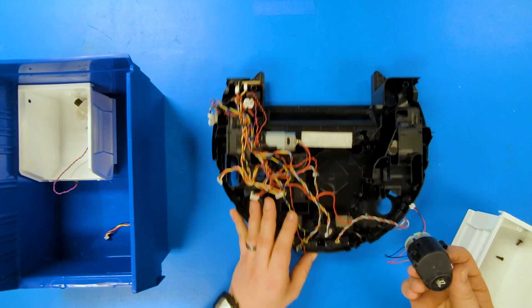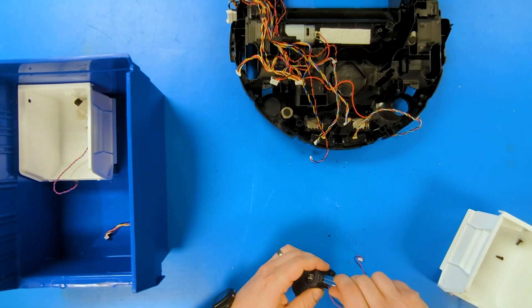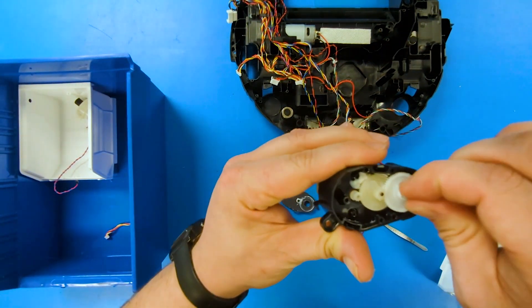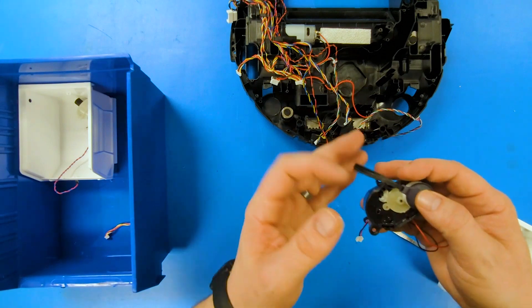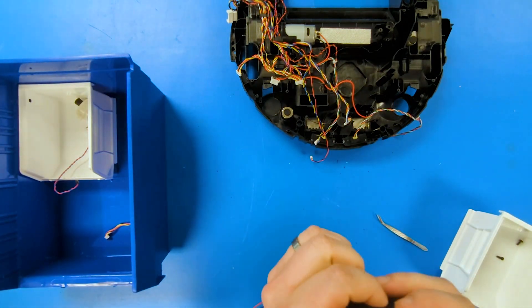Next, this is the sweeper motor. This has a small gear train inside of it. It's got a DC motor and a simple gear train inside of here. This just spins the side sweeper, sweeps everything into the path of the main sweeping brushes.